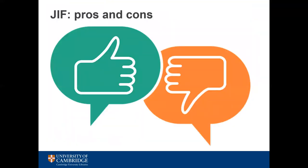The pros of the JIF are that it's a commonly used metric that is familiar to many people. However, it can be manipulated through self-citation and through editor pressure to cite papers from their journals. New journals and smaller specialisms are also disadvantaged — a smaller discipline may have one leading journal that never accumulates as many citations as larger journals. There are also questions about whether the JIF truly reflects the quality of research published in a journal.